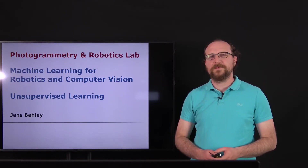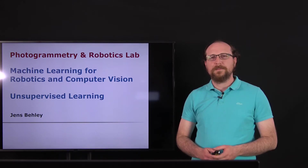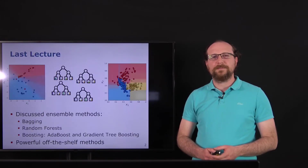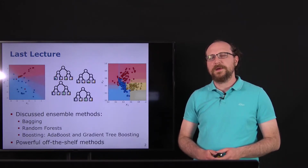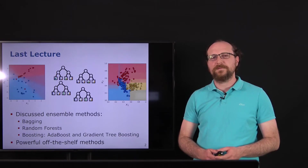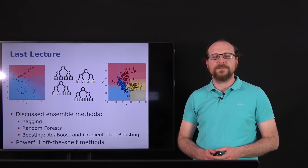Hello and welcome to the fifth lecture of Machine Learning for Robotics and Computer Vision. In this lecture we want to talk about unsupervised learning, but first let's have a look at what happened in the last lecture. In the last lecture we talked about ensemble models and specifically we talked about bagging, random forest, boosting, and in particular AdaBoost and gradient tree boosting.